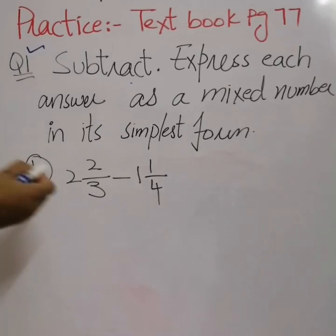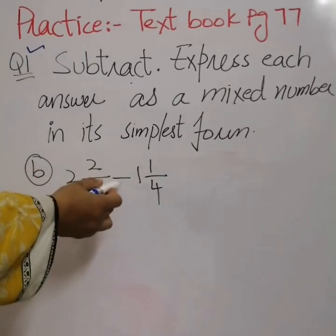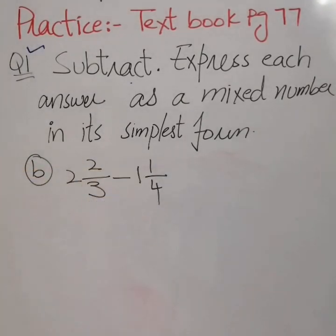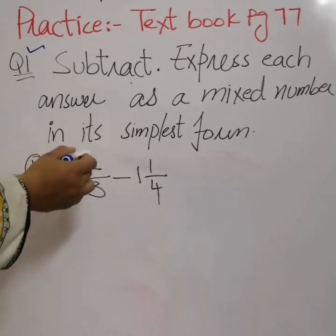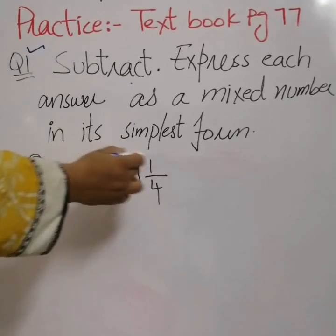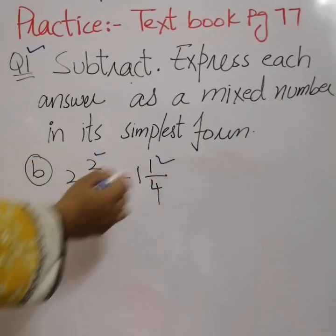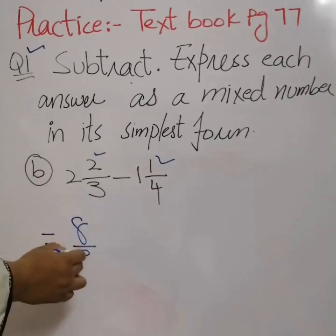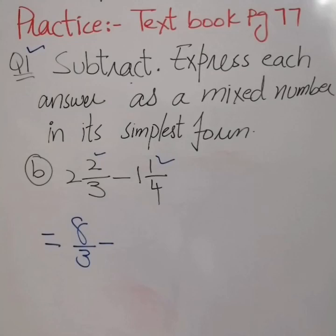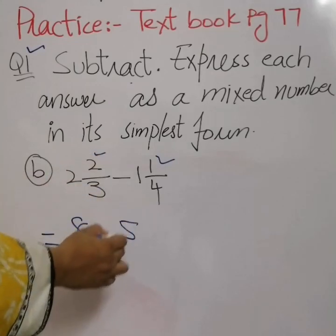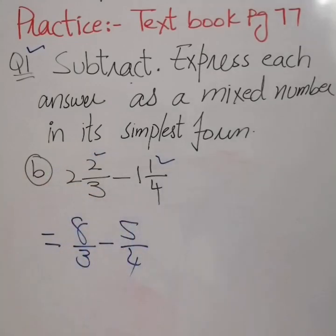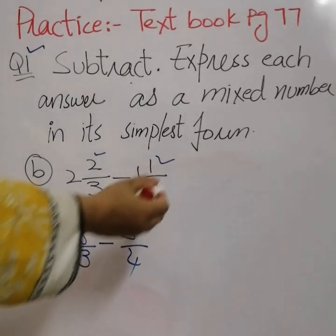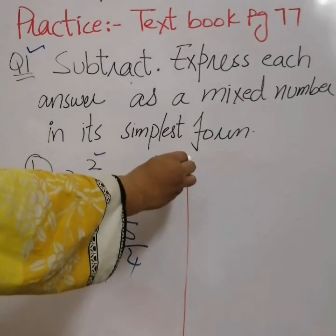Now we have part b: 2 whole 2 over 3 minus 1 whole 1 over 4. First of all we convert these mixed numbers into improper fractions: 8 over 3 minus 5 over 4. Now we make the denominators the same by taking the LCM of 3 and 4.